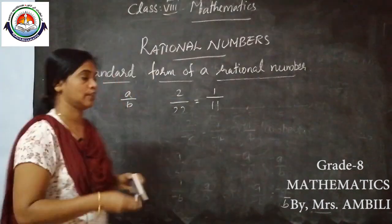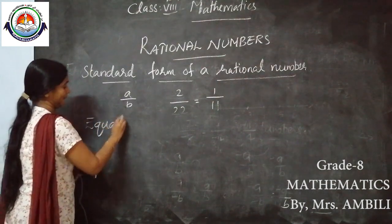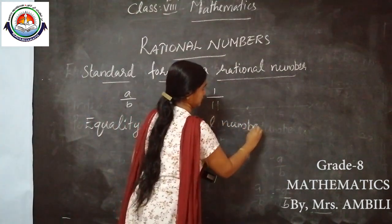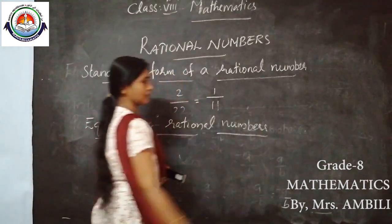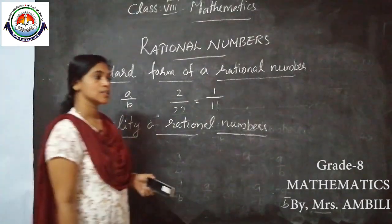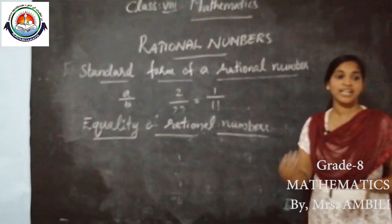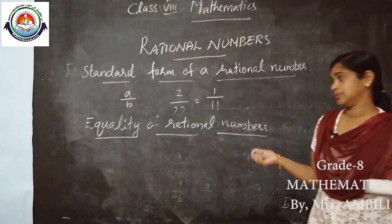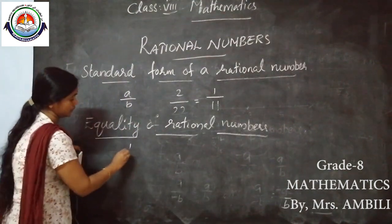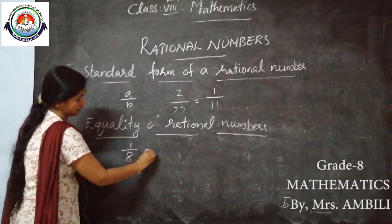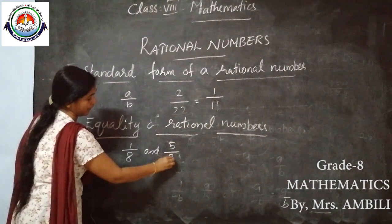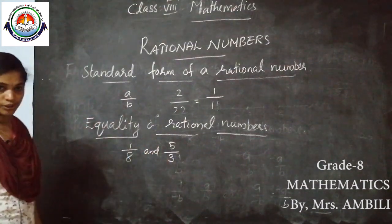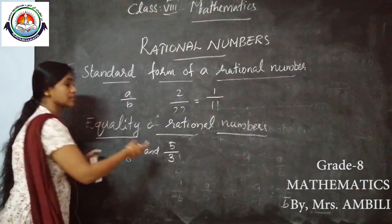Our next topic: equality of rational numbers. Here we need to check whether two given rational numbers are equal or not. You can take two rational numbers: 1/8 and 5/3. We need to check whether they are equal or not. For checking, we just cross multiply them.